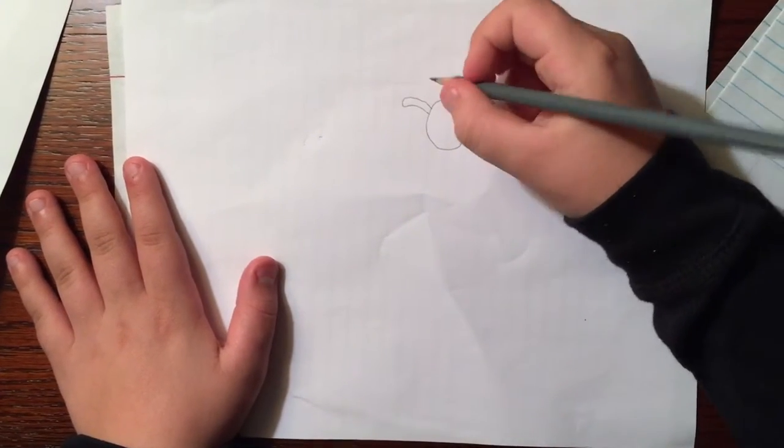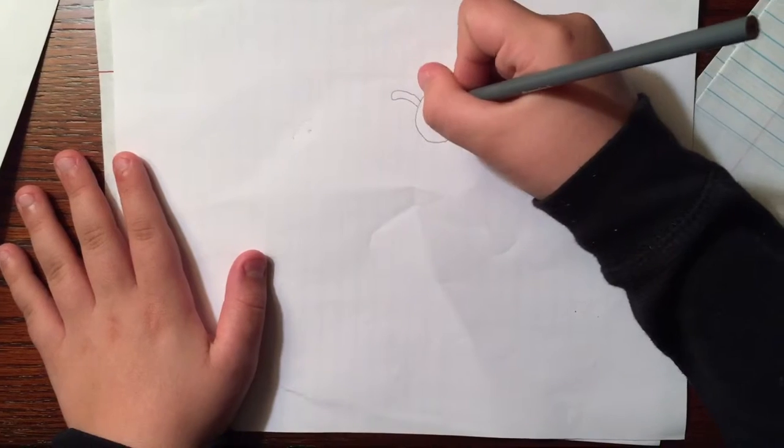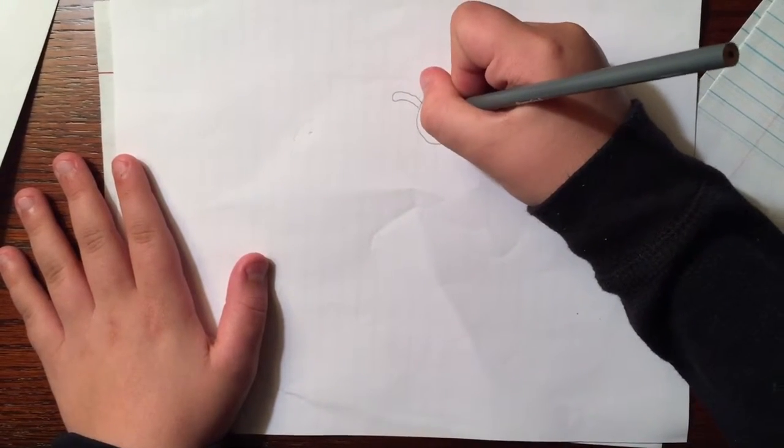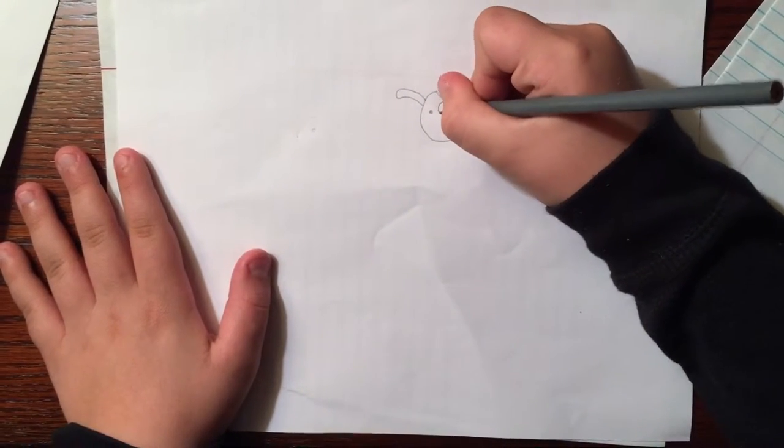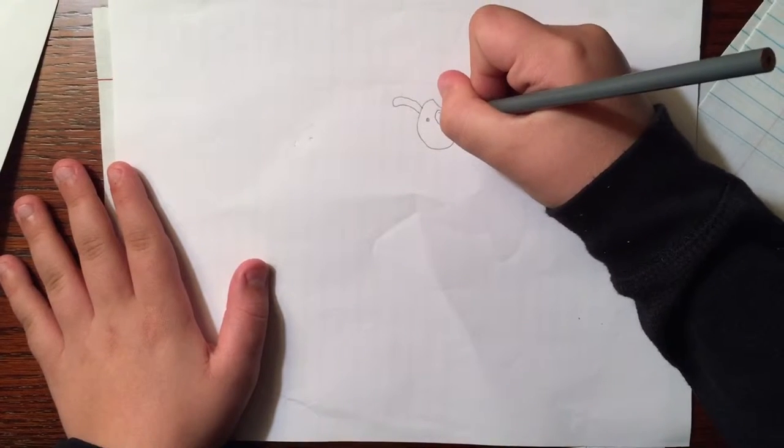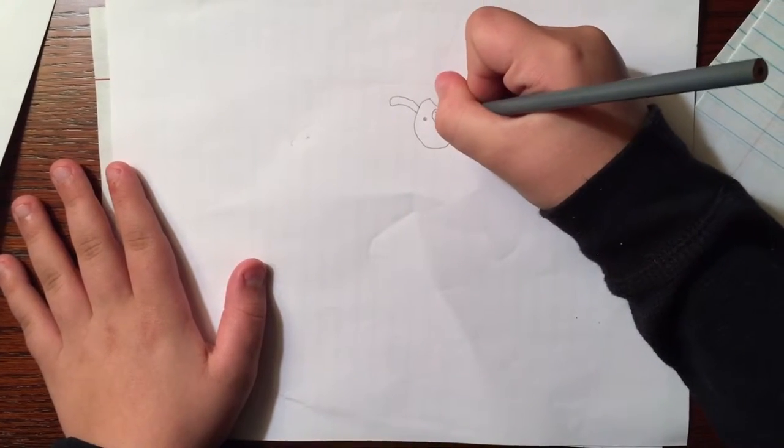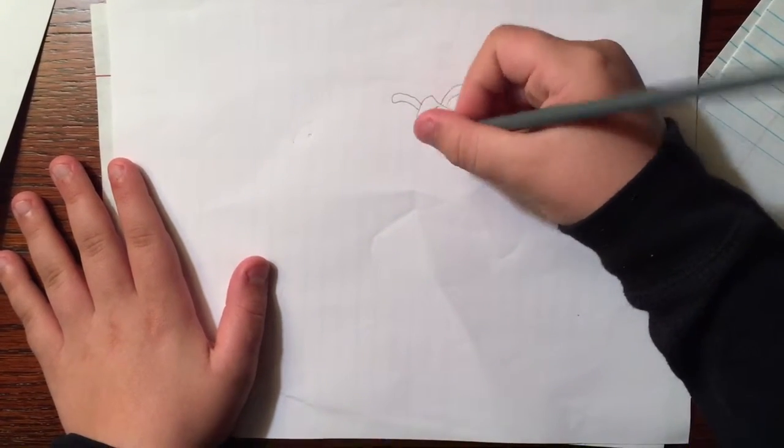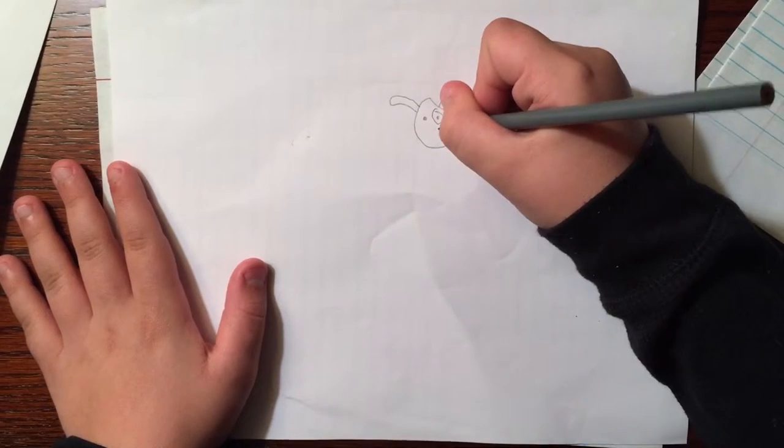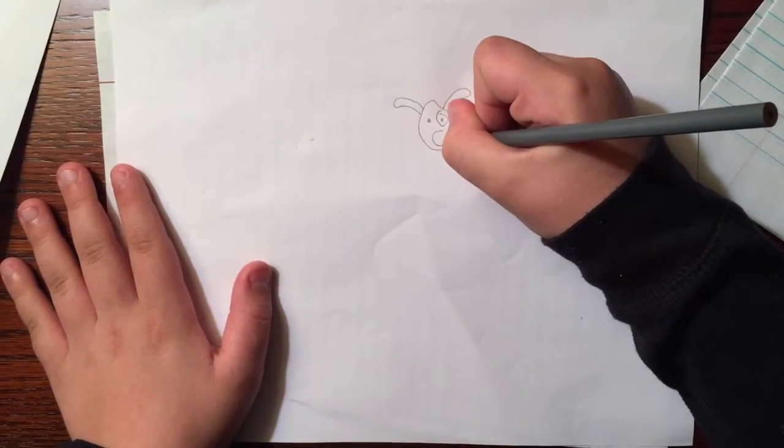For the eyes, you do one little circle and you do one big circle and another little circle. Then you can add a mouth if you want to, but I'm just going to put a nose.